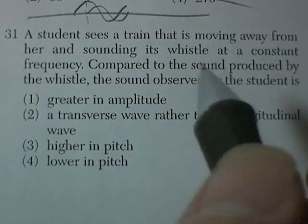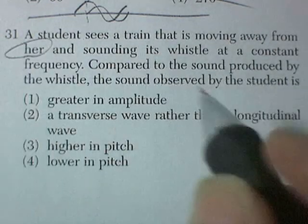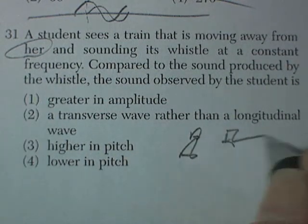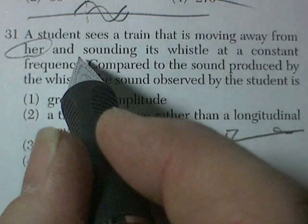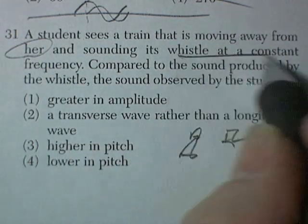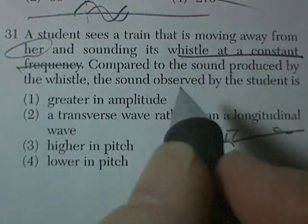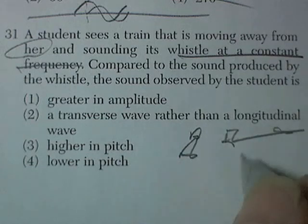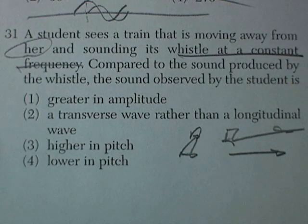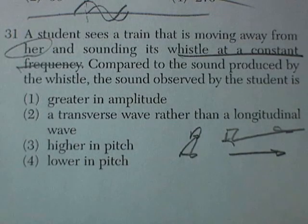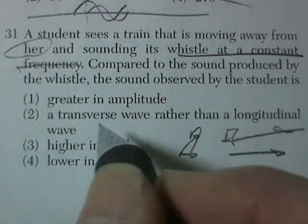A student sees a train that is moving away from her. So there you are, minding your business, and a train is going away from you. Compared to the sound produced by the whistle. So it's making a whistle at a constant frequency. Compared to the sound produced by the whistle, the sound observes. So if it's moving away from you, that's Doppler effect. So that's the meow sound. And so as it's coming towards you, it's a higher frequency. And as it's going away from you, it's a lower frequency. So it's going to be lower frequency.